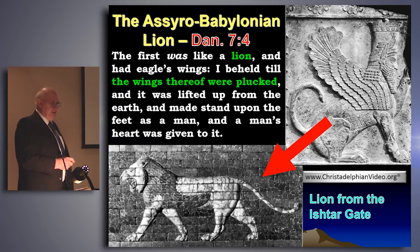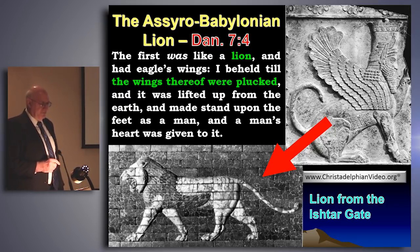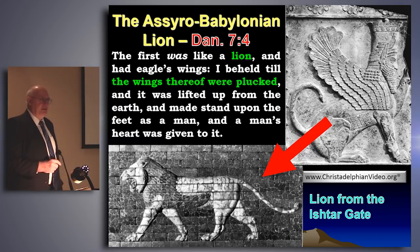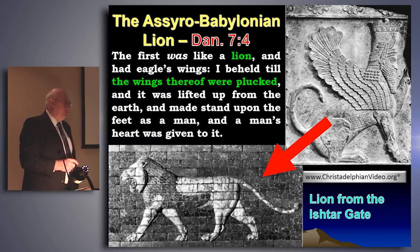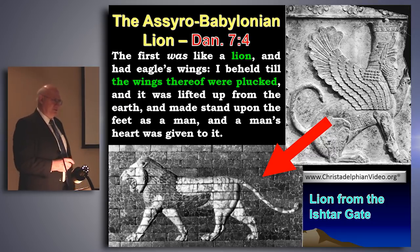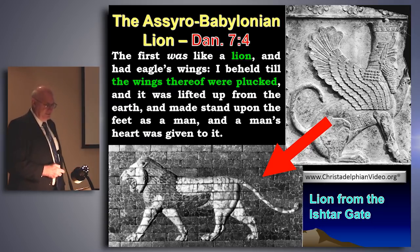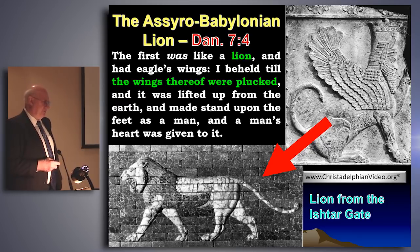Here we've got Babylon represented by this beast. The first was like a lion and had eagle's wings. The wings thereof were plucked — that is, the Assyrian phase passes — and it was lifted up from the earth, made to stand upon the feet as a man, and a man's heart was given to it. That's telling us the empire of Babylon was a little less ruthless than the Assyrian empire. You remember that Gog is represented by the Assyrians in prophecy, and the ruthlessness of Gog is spelled out for us in Zechariah 14.